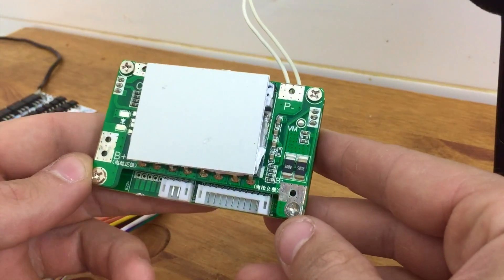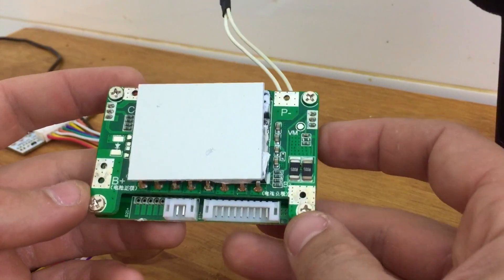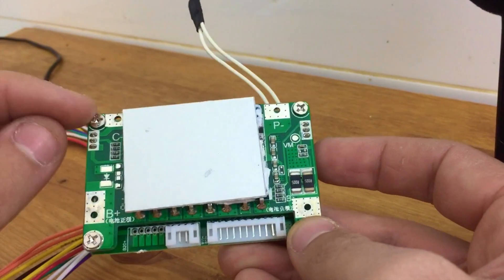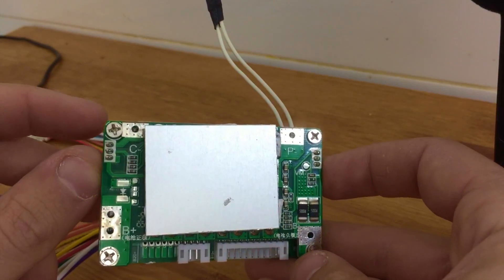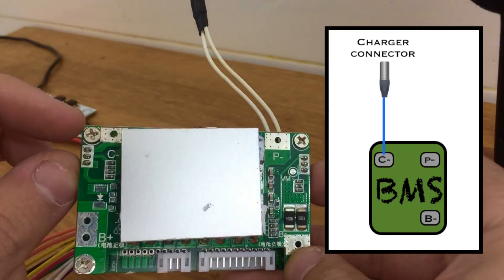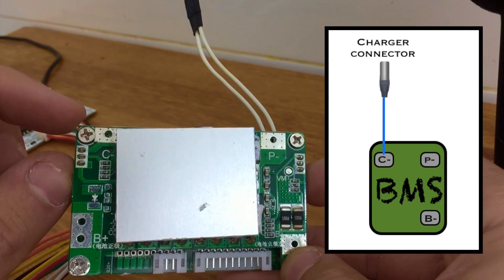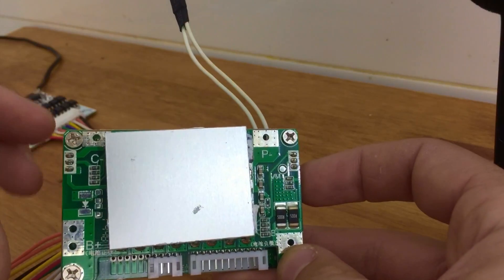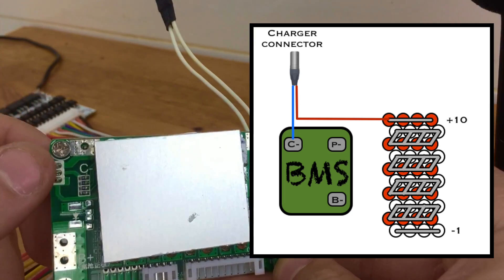There are three main connections that we're going to have on here, at least for the large-gauge wires. The first one is the C-, you can see up here. This is an easy one. This is just for the charger. Here you're going to have whatever wire that you have going to your charger connector coming from here straight to your charger connector. That's going to be the negative wire. The positive wire for your charger is going to go straight to the positive of your battery. That's not going to connect to the BMS at all.